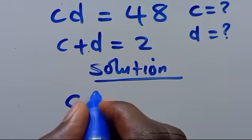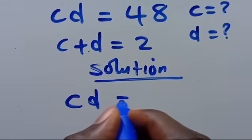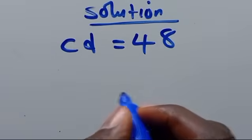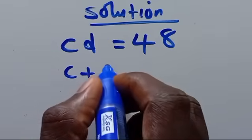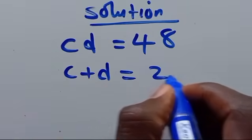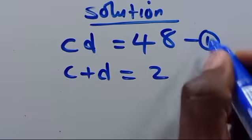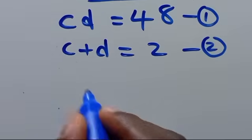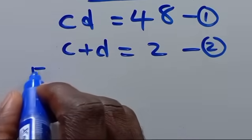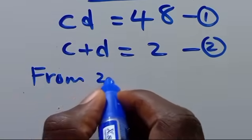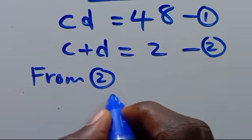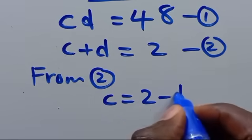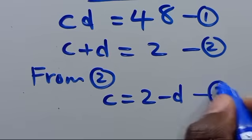We have cd equals 48 — call this equation 1 — and c plus d equals 2 — call this equation 2. From equation 2 we can have c equals 2 minus d. Let's name this equation 3.